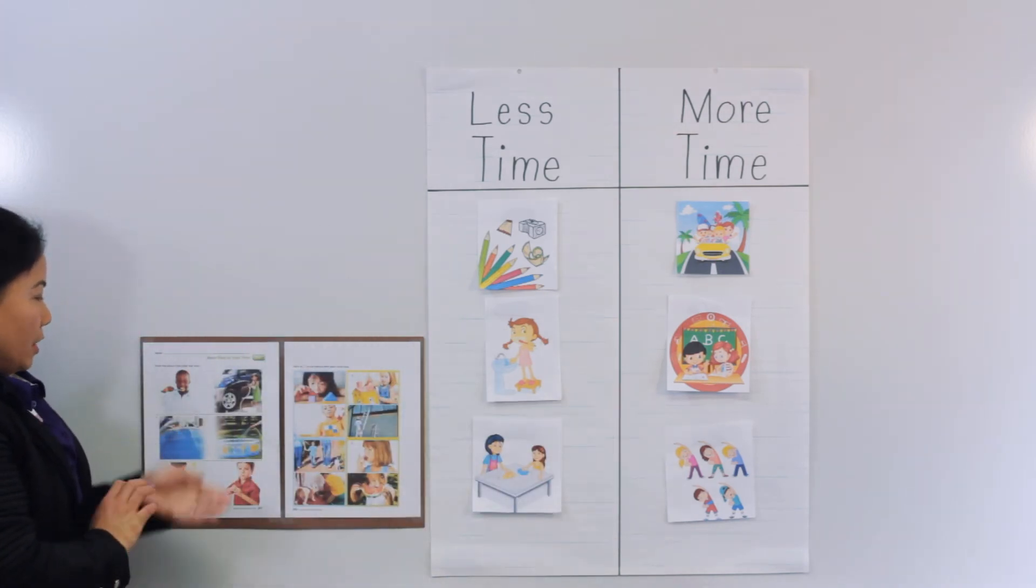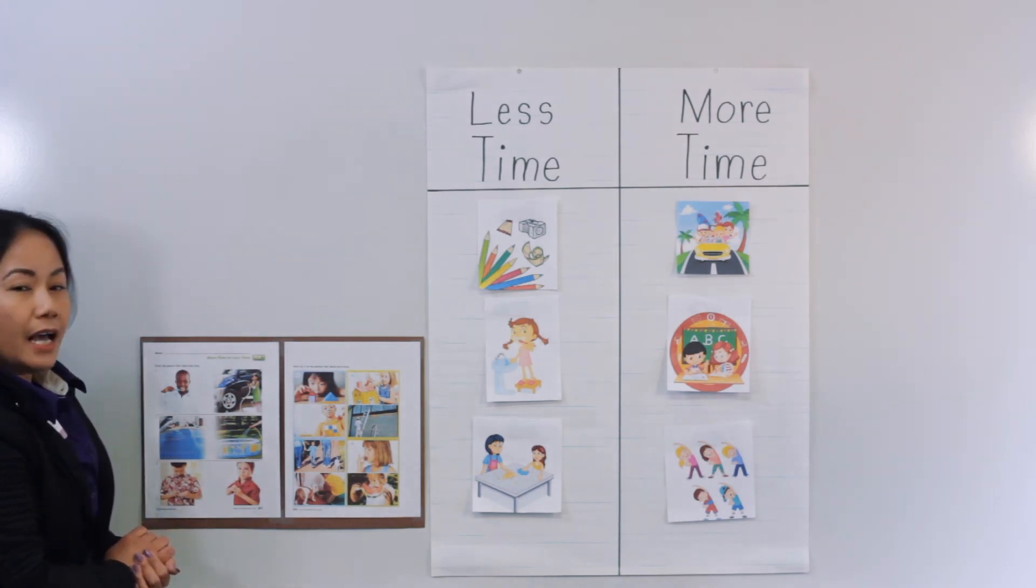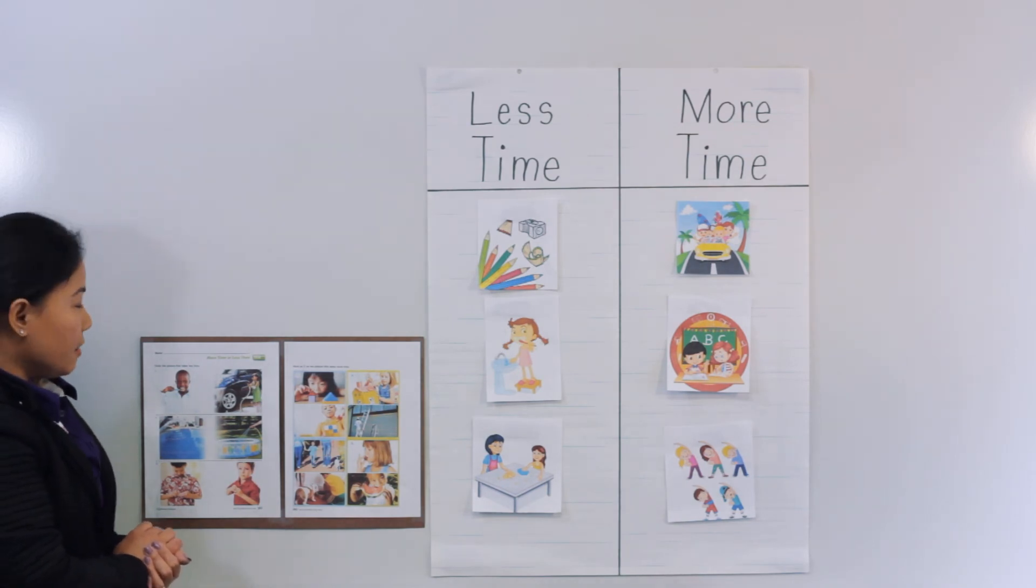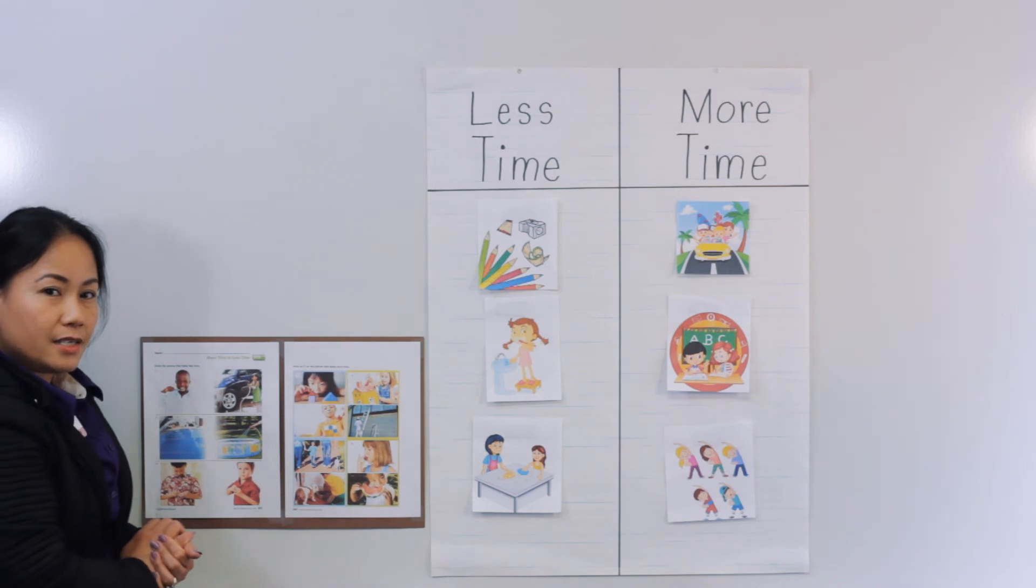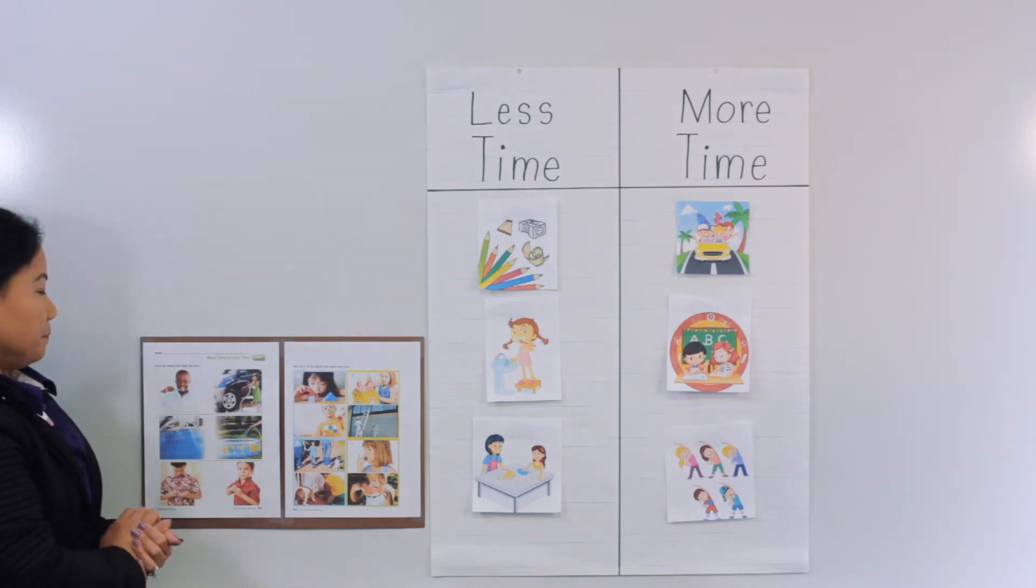On your seatwork today, we are going to circle the pictures on the front page about the activities that we do less. Is it brushing teeth or washing a car? What do you think that will take us less? You're right, brushing teeth. Now you are going to do the next two activities for me.